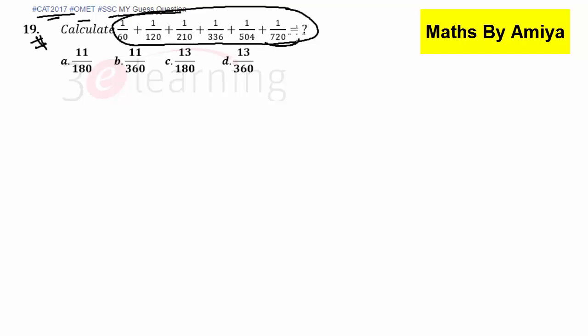There are few numbers like 720. 720 is nothing but 8 into 9 into 10. Like 210, 210 is nothing but 5 into 6 into 7. You just need to factorize and check is there any sequence going or not.